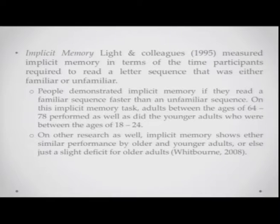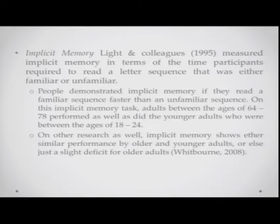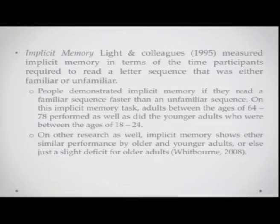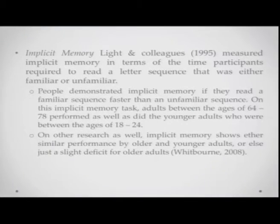Implicit memory involves no explicit recall requirement — you must do a task that involves memory of previously learned information. Light and colleagues measured implicit memory by the time required to read a letter sequence that was either familiar or unfamiliar. Adults between ages 64 to 78 performed relatively as well as younger adults aged 18 to 24. On other research as well, implicit memory shows either similar performance by older and younger adults, or just a slight deficit for older adults — so in implicit memory tasks there is almost no difference.